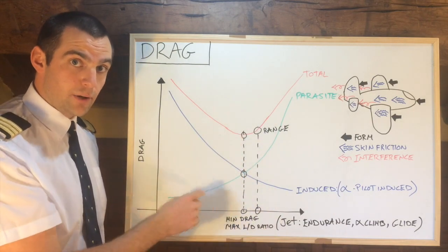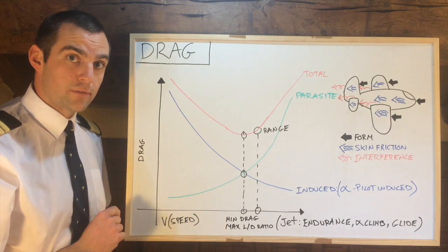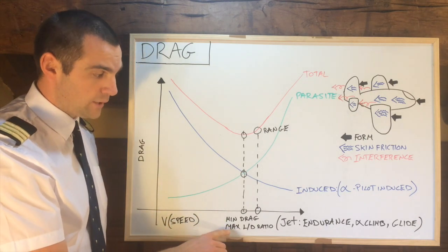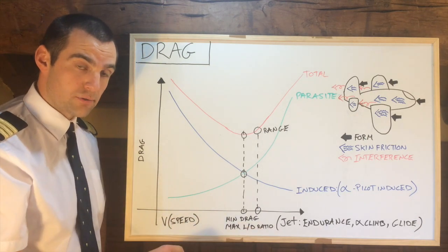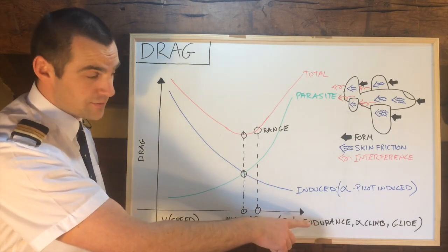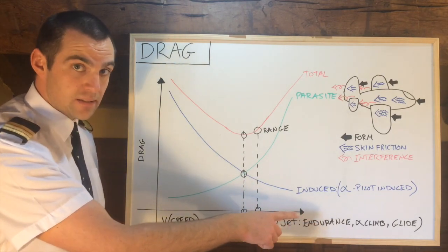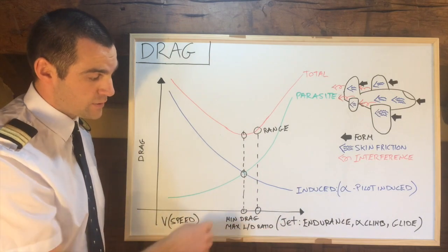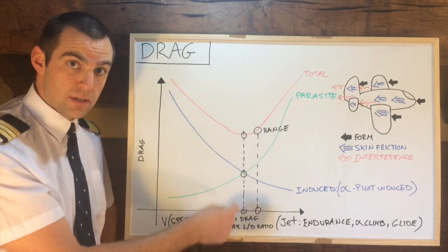Now that point right there, the lowest drag point, also coincides with a lot of other points. So it's also L/D max, the maximum lift to drag ratio, and on a jet the endurance, best angle of climb, and best glide speed also coincide very closely with that minimum drag speed right there.